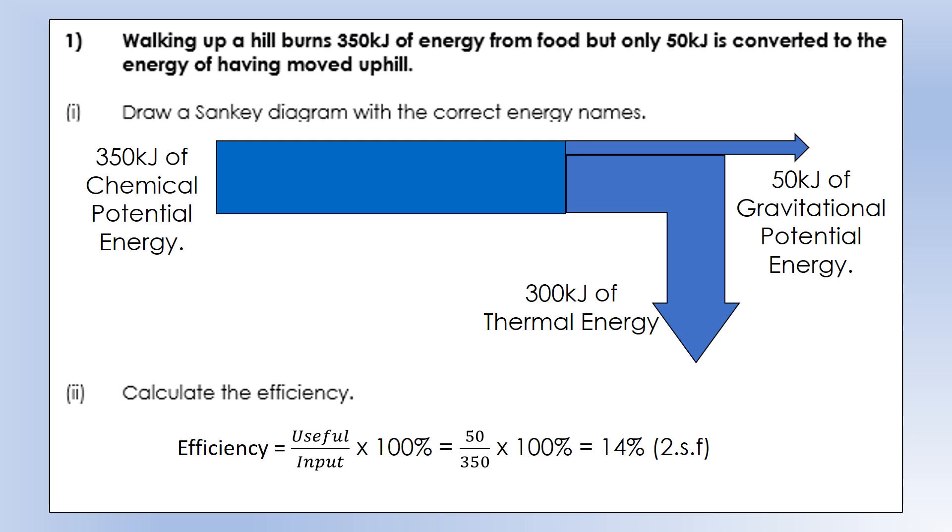The size of our arrows on the Sankey diagram indicates the quantity. It starts all as chemical potential energy, 350 kilojoules. The useful is the one that goes straight along the top, that's GPE, 50 kilojoules. Then the wasted comes down, 300 kilojoules, so the total energy at the start, 350 kilojoules, equals the total energy at the end, 350 kilojoules.